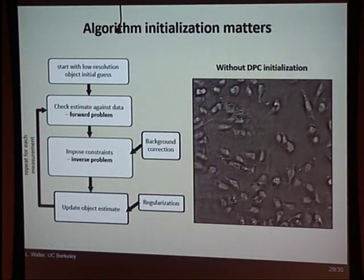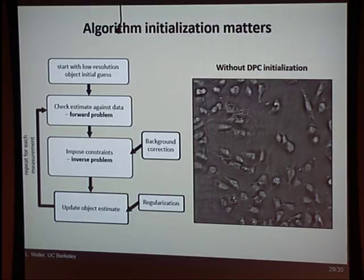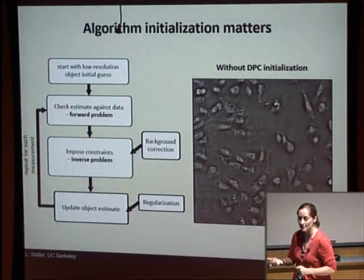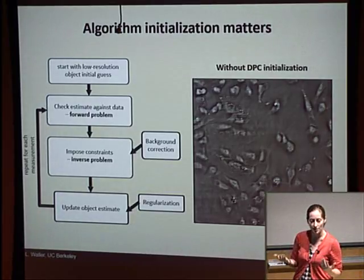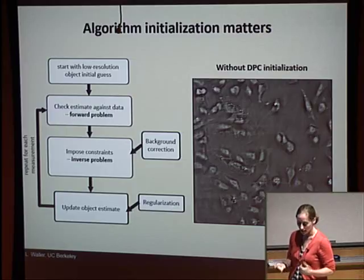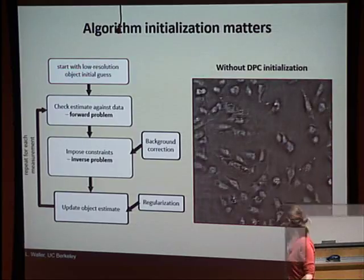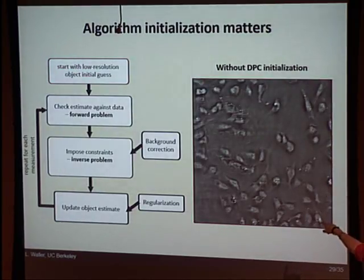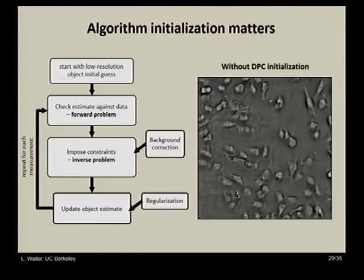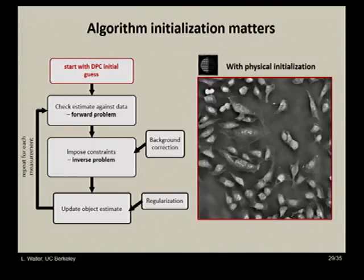The other key piece we looked at is initialization. In a non-convex problem, starting close to the correct answer is very important. Physically-based initializations have been much more powerful than theory-based ones. We use DPC: add up all images from the left half and right half, subtract them, and solve for quantitative phase using the Born linearization — it's only the initial guess but it's a good one because it's a fairly accurate approximation. Without it, phase retrieval very often fails. With it, we get much better results. The problem is we lost all the low spatial frequencies, and the DPC initialization gets those back in the right place so the algorithm doesn't have to work as hard.